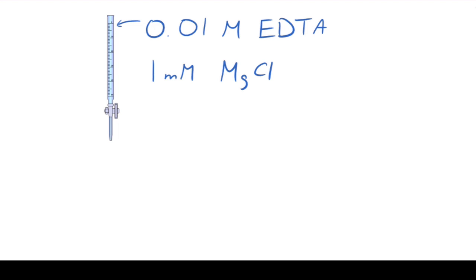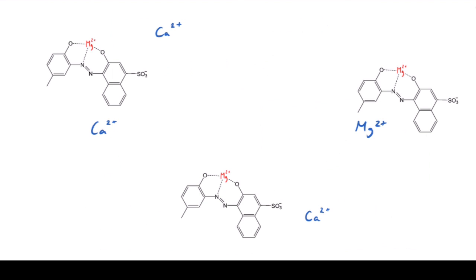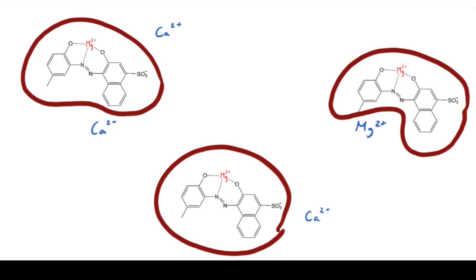To titrate our aliquot, we will be using a solution of 0.01 molar EDTA and 1 millimolar magnesium chloride. Before we start the titration, the Erlenmeyer flask contains a mixture of free calcium and magnesium ions and calgamite indicator complexed with magnesium, which gives it a wine red color.